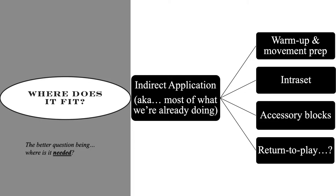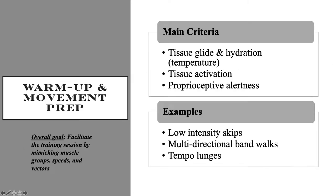There's a ton of value in intraset work, both for saturating the training session and for throwing in sling movements — carries, lunges, split squats, chops. Your accessory blocks are a great place to layer training and make it more fascial or sling-oriented, where prudent or needed. For the warm-up, our main criteria are tissue glide and hydration — collectively tissue temperature — and activation and proprioceptive alertness: low-intensity skips, multi-directional band walks, and tempo lunges.